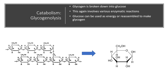Let's talk about glycogenolysis in a little more detail. As you can see in this picture, glycogen is broken down into many glucose molecules. This process involves a variety of enzymatic reactions, and this glucose can itself be used as energy or it can be reassembled later on to form more glycogen.